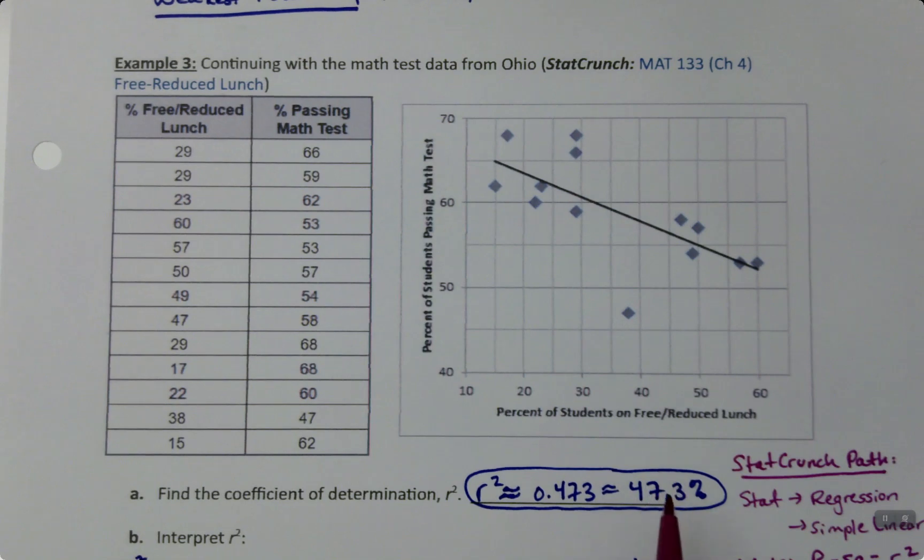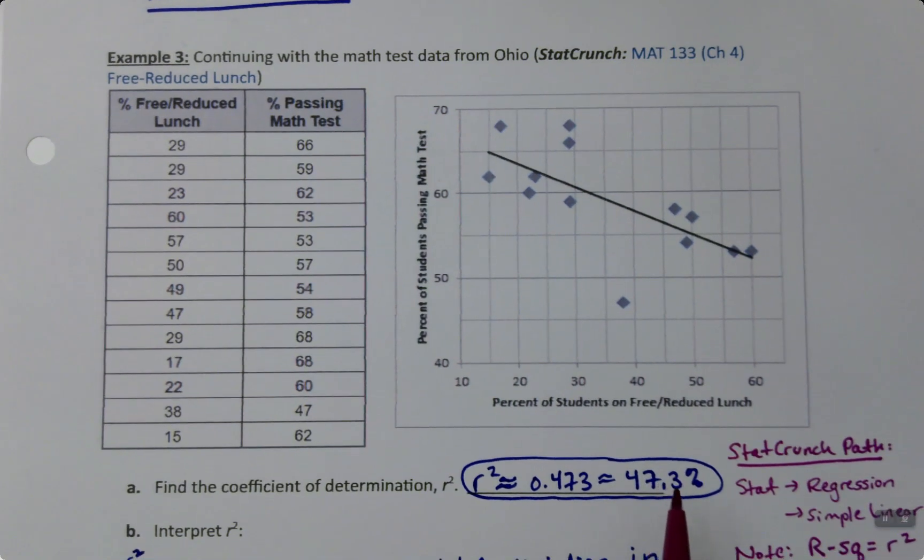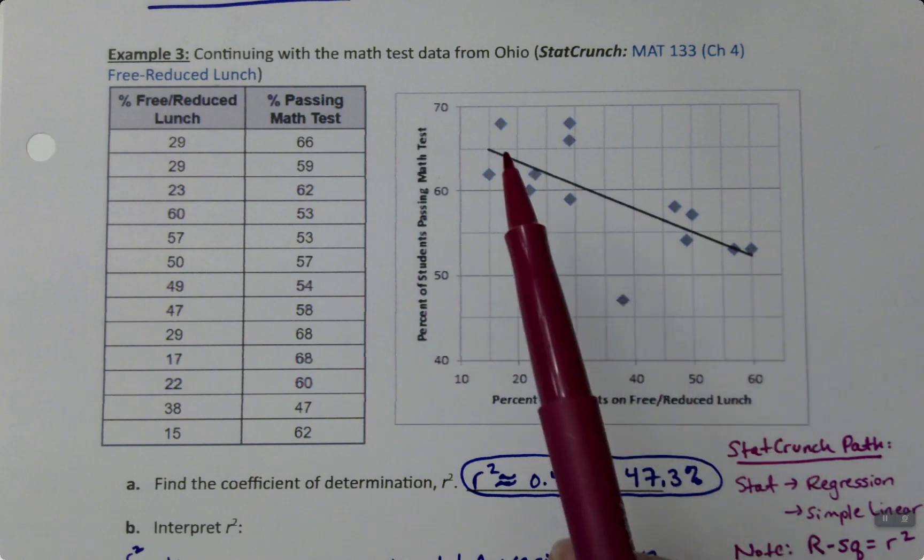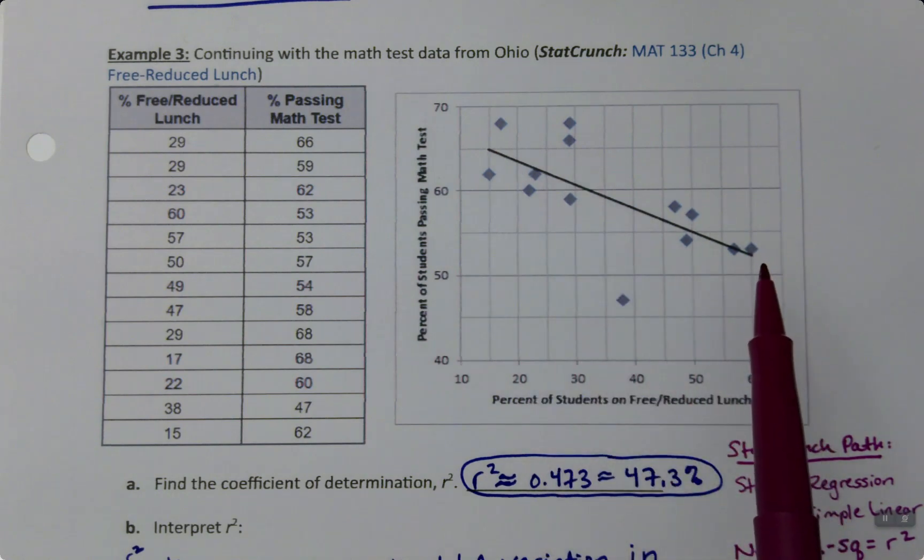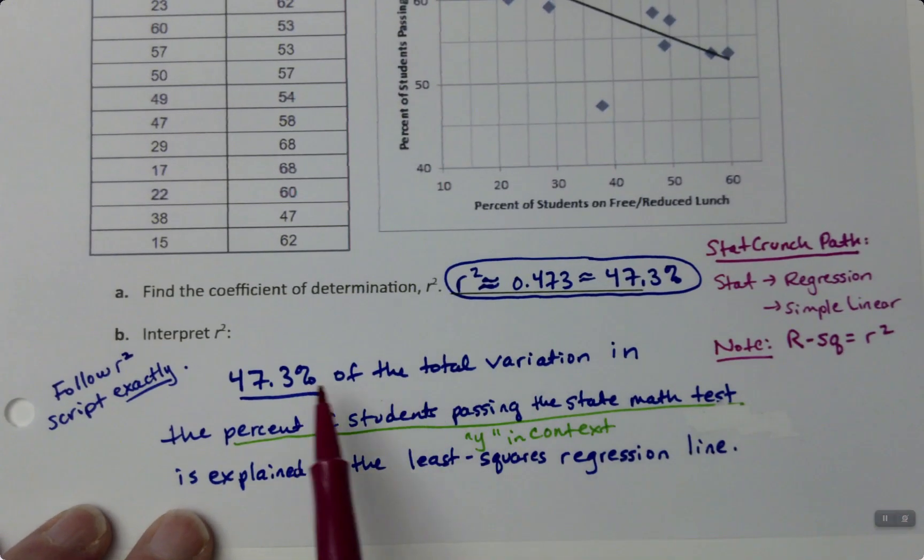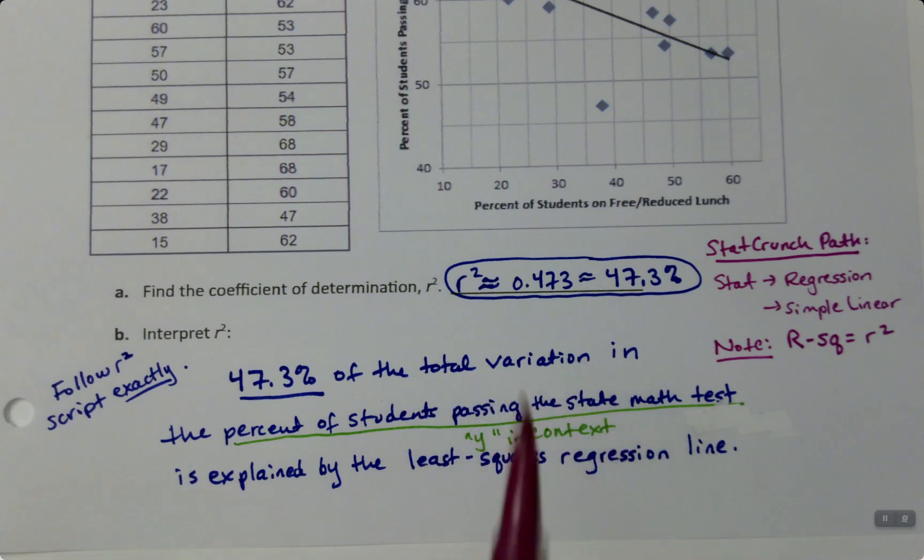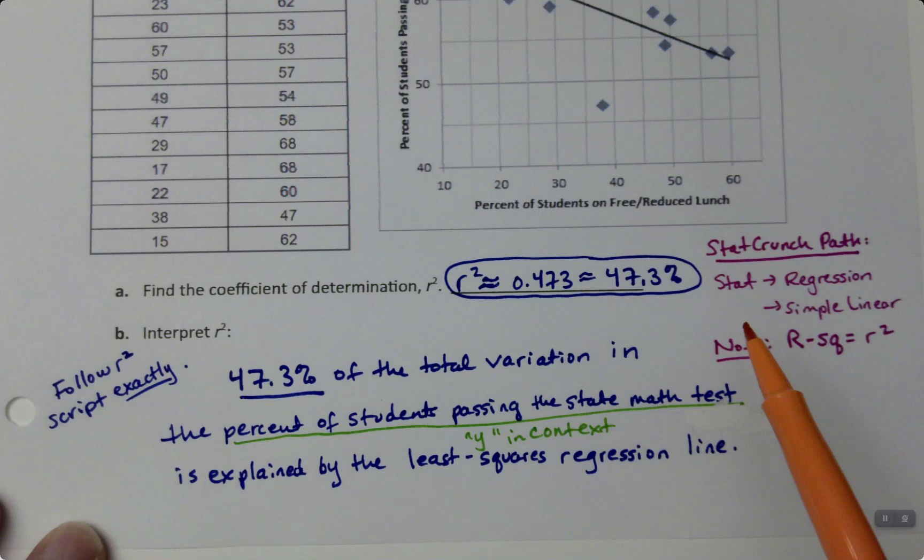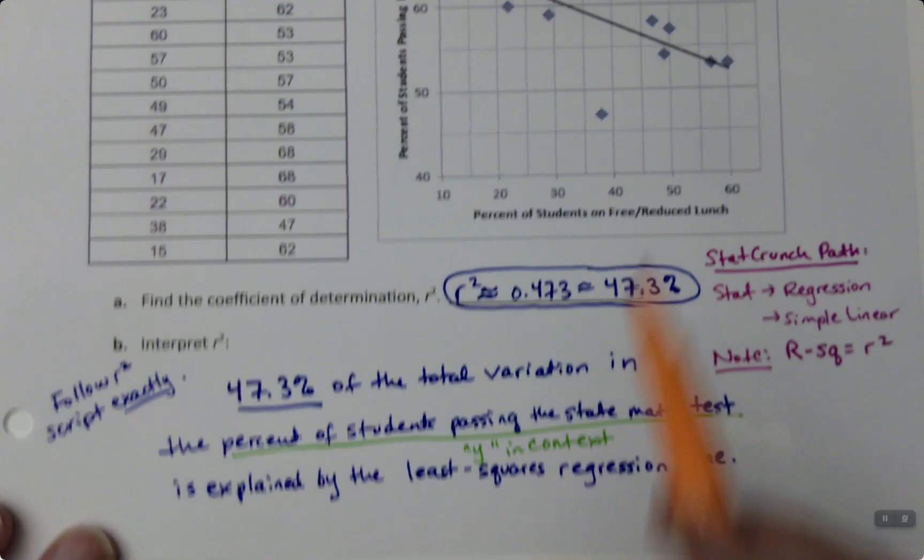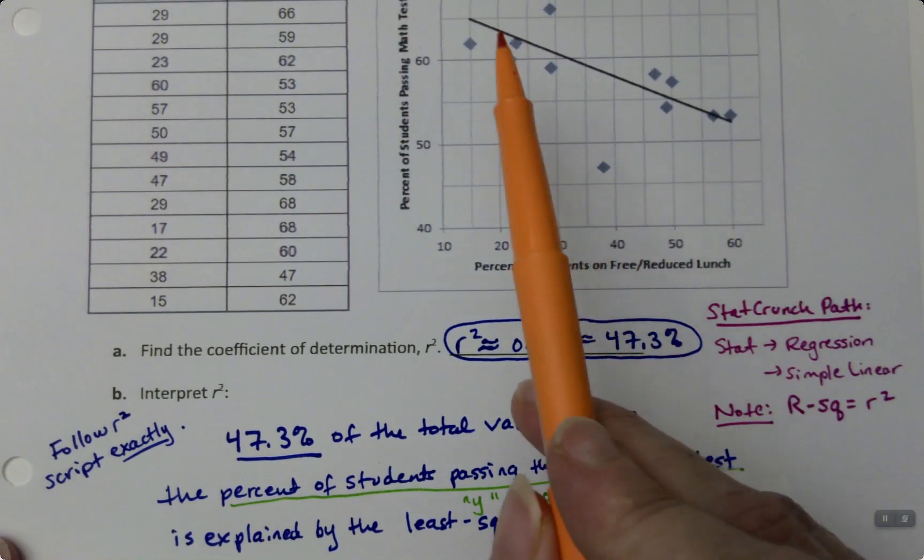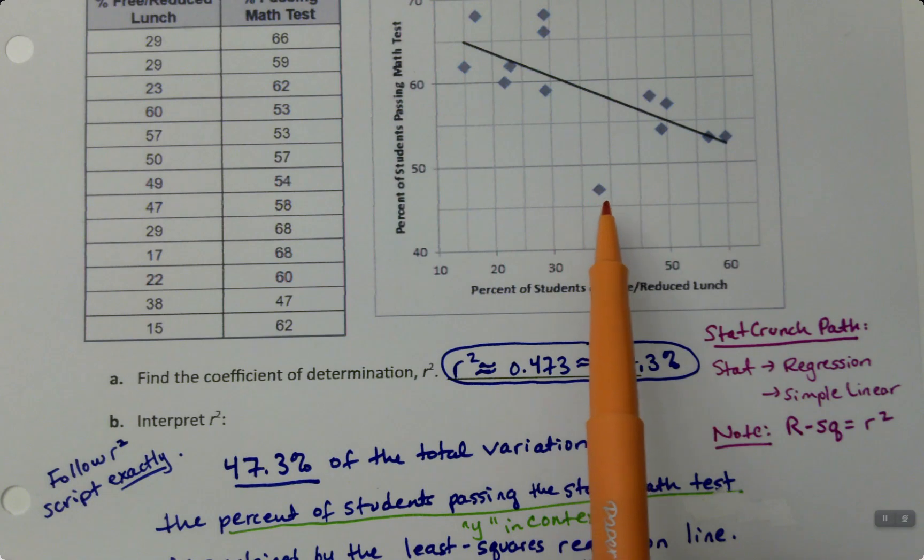47.3% of the total variation in Y—that up-and-downness—can be explained by the line. So the line is doing a decent job of explaining the variation, but there's a lot more that we don't understand about why some schools score high and some score low.